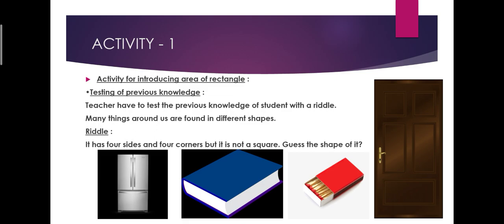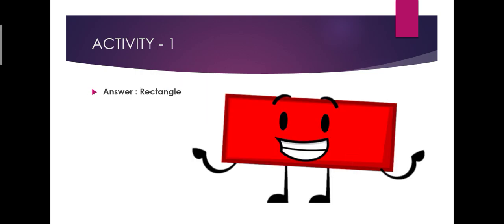Here I use the riddle for introducing the area of rectangle. Riddle: it has four sides and four corners, but it is not a square. Guess the shape of it. Here the children will guess the shape and they recall the shape. So rectangle shape things, example: frame, book, door, matchbox, like that. Then they will give the answer: the shape is rectangle.